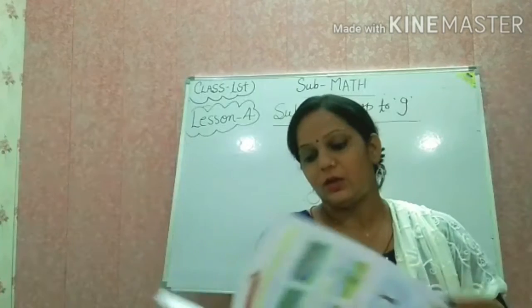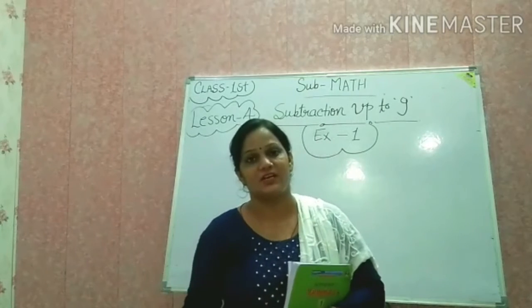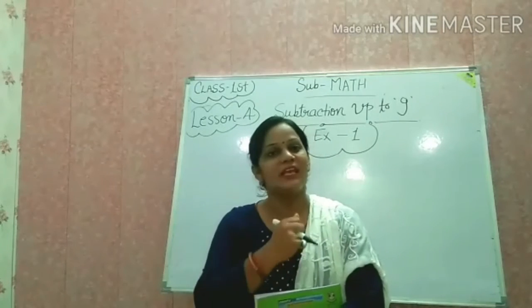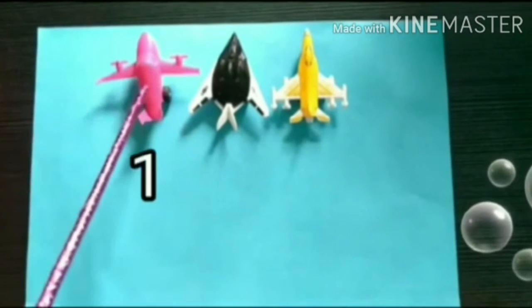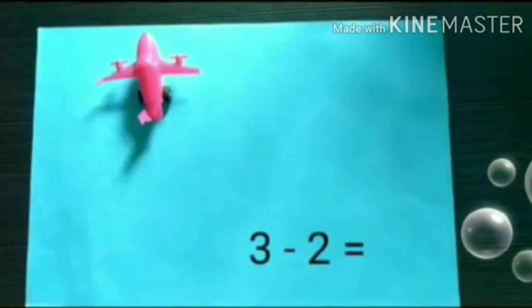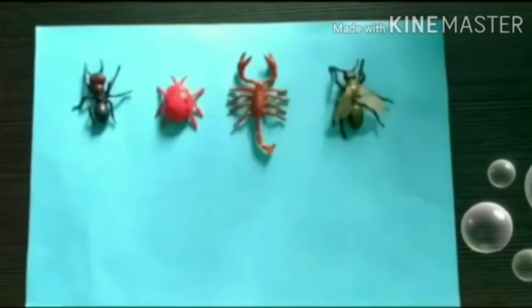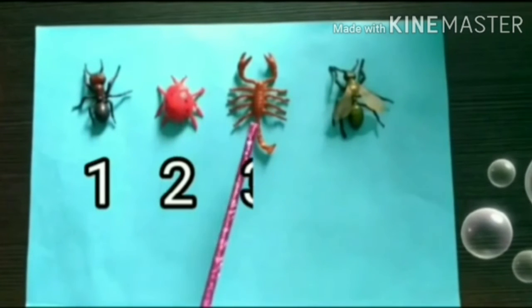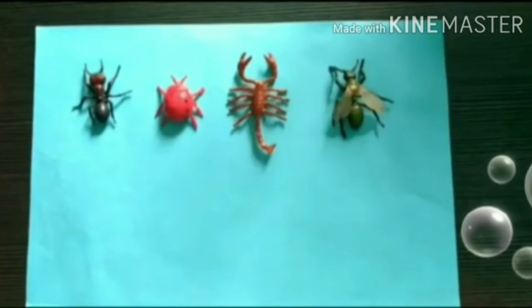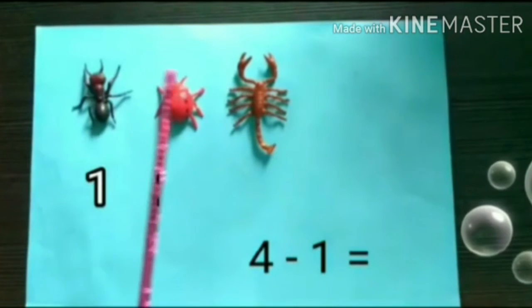So I hope ki aapki samajh mein aa gaya — what is subtraction? Agar aapko koi doubt hai ya samajh mein nahi aaya, toh uska bhi solution hai hamaare paas. Children, tell me — how many airplanes do we have? We have three airplanes: 1, 2, 3. So if I take away two airplanes with me, how many airplanes are left now? One. Yes. So children, how many insects — see here? 1, 2, 3, 4. Yes. So one insect flew away — how many are left now? 1, 2, 3. Yes.